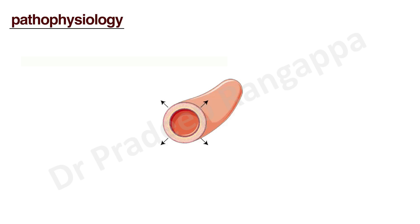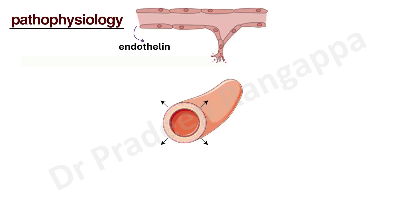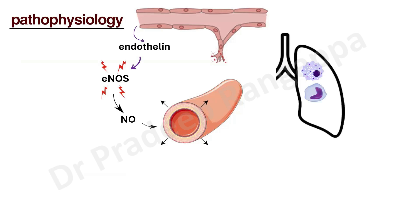Regarding pathophysiology: in hepatopulmonary syndrome there is dilatation of the pulmonary vasculature. The fulcrum of pathophysiology is vasodilation occurring through various processes. One process involves endothelin release from endothelial cells within the vasculature, leading to activation of endothelial nitric oxide synthase, producing nitric oxide — a potent vasodilator. All pathophysiological mechanisms lead to vasodilation via nitric oxide.